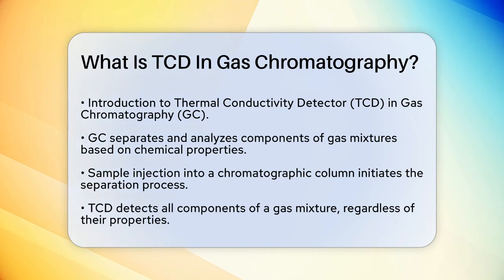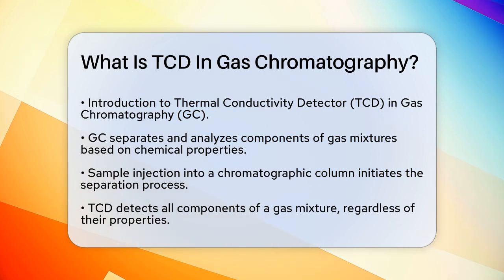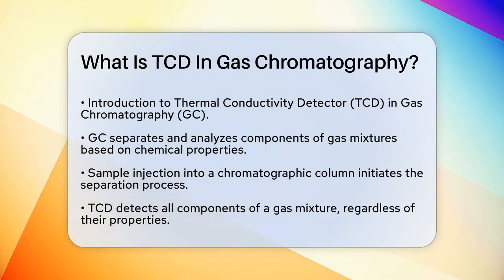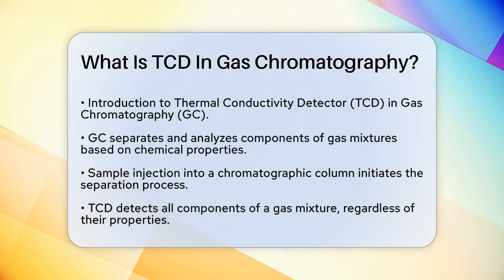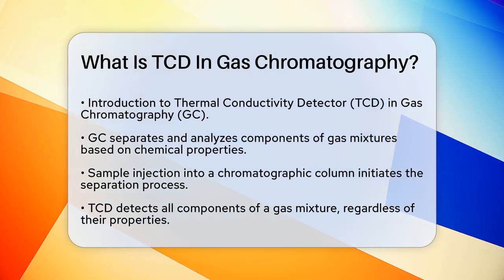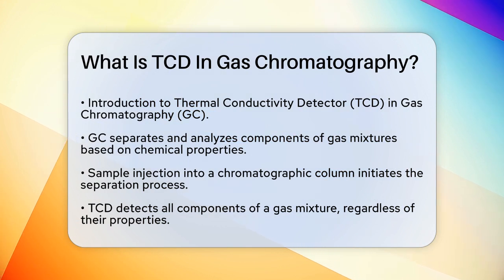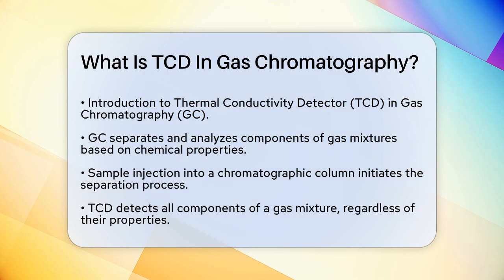Gas chromatography, or GC, is a technique that separates and analyzes the individual components of a mixture. A sample is injected into a chromatographic column, where the components are separated based on their unique chemical properties, like boiling point or polarity. As these components come out of the column, they pass through a detector. One of the detectors commonly used in GC is the Thermal Conductivity Detector, or TCD.